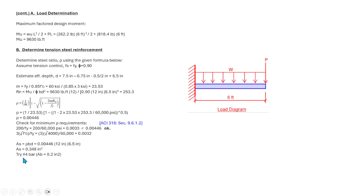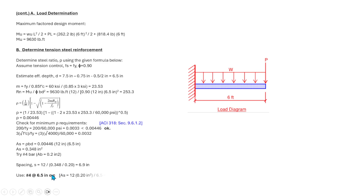The required steel area As = ρ × b × d = 0.00446 × 12 × 6.5 = 0.348 in². Using #4 bars (area = 0.2 in²), the required spacing = (12 / 0.348) × 0.2 = 6.9 inches. Use #4 bars at 6.5 inches on center, which gives As = 0.37 in², which is greater than the required 0.348 in². OK.